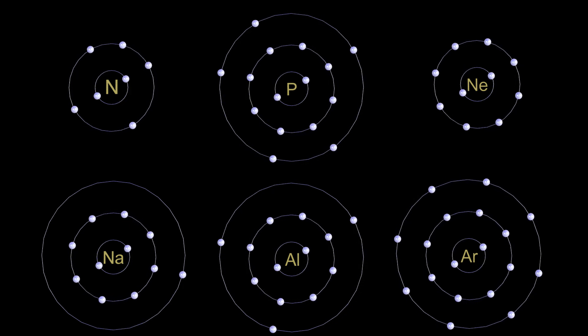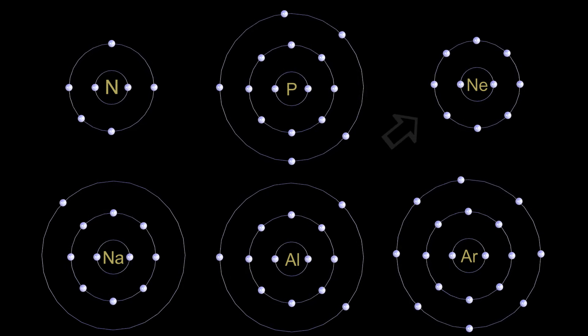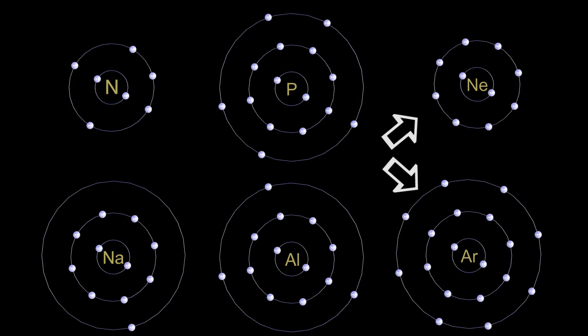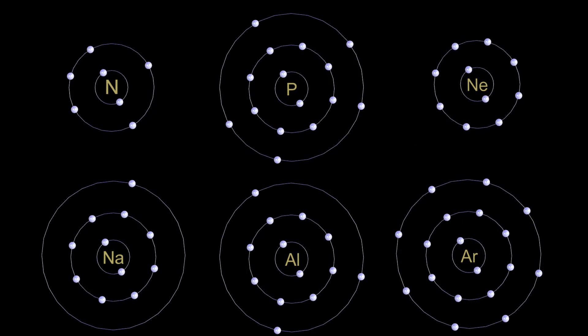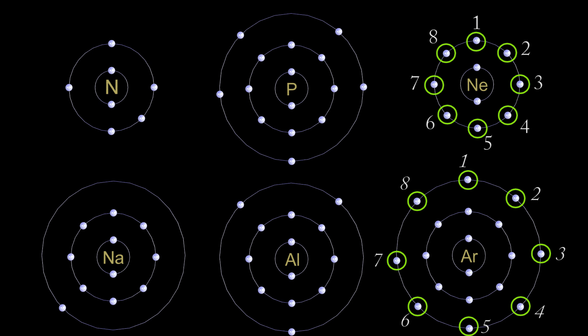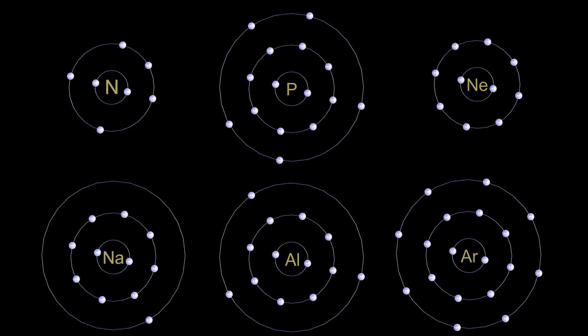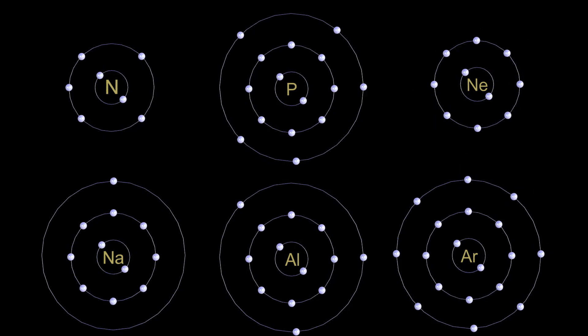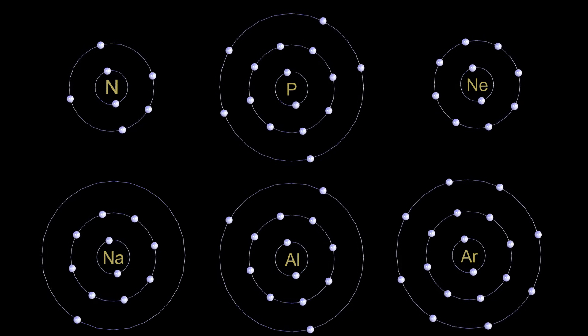Now looking at the far right, we have two noble gases, neon and argon. Neon and argon are classified as a noble gas because their outermost shell is already filled by default. This means that neon and argon do not need to react with other elements or compounds to become stable. This is why noble gases are very hard to react.